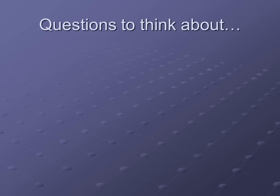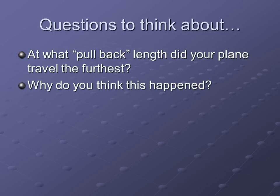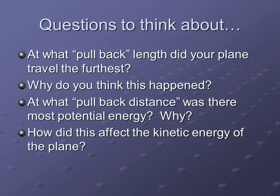Now that you've got your data and run the lab, here are some questions to answer from your experiment. For those of you in an afternoon tutoring session or doing this in the library and you can't run the lab, you still need to do these questions and conceptually think about what should happen — think back to the bow and arrow example. First question: at what pullback length did your plane travel the furthest, and why do you think this happened? Use vocabulary words — potential and kinetic energy — in your answer. Next: at what pullback distance was there the most potential energy, and why? And last: how did this affect the kinetic energy of the plane? Go ahead and pause it so you have time to answer, then continue playing the video.